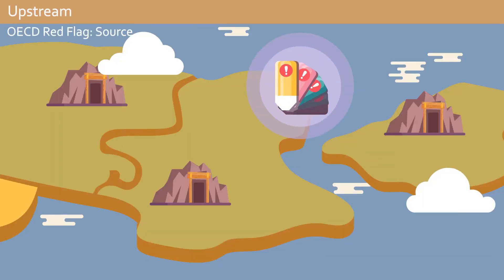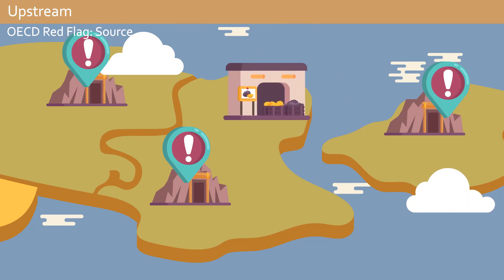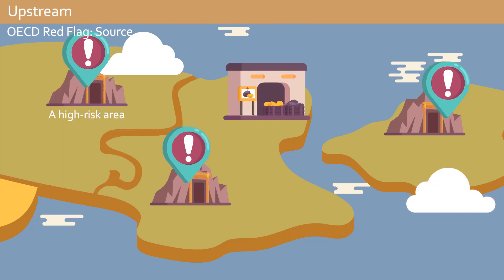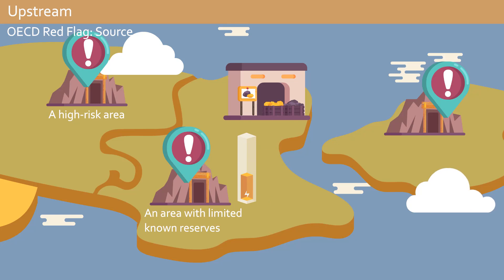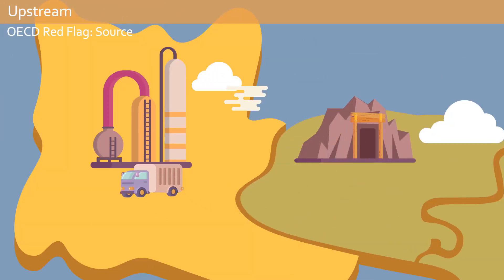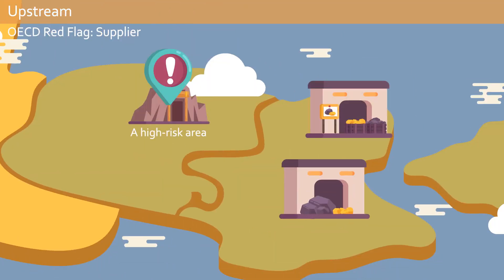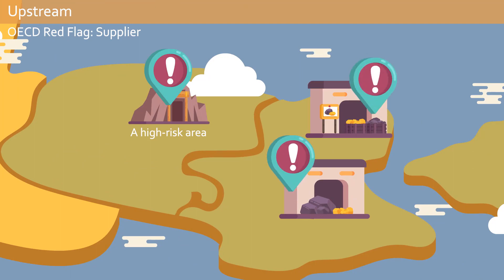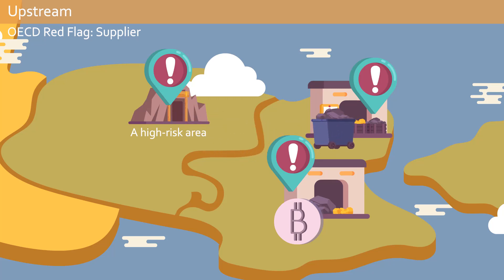The first three red flag criteria ask: was the area the supplier says the materials came from or passed through a high-risk area, or an area with limited known reserves, or a country where materials from high-risk areas are known to transit? For recycled gold, the criteria also ask if it was refined in a country where gold from high-risk areas transits. The next two OECD red flag criteria ask: do the supplier or supplier's suppliers have a stake in a company that operates in or supplies materials from a high-risk area, or have they sourced materials from a high-risk area in the past year?